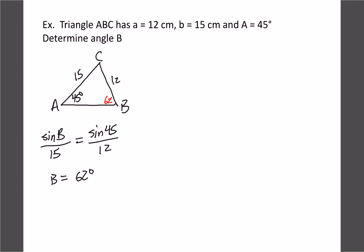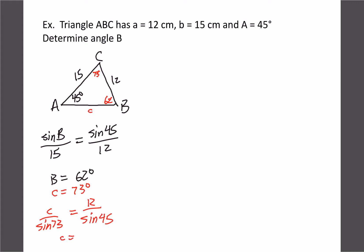If B is 62 degrees, using the 180 rule that gives us 107, so angle C up here would have to be 73 degrees to add up to 180. Then we can figure out side c: c over sine 73 equals 12 over sine 45. Cross-multiplying: 12 times sine 73 divided by sine 45 gives us a side c of 16.2. That's the triangle solved.